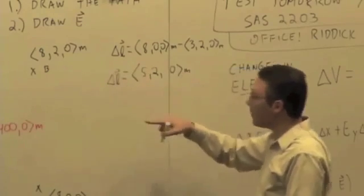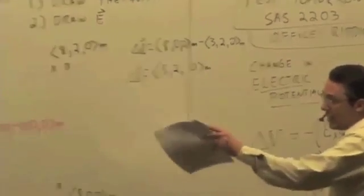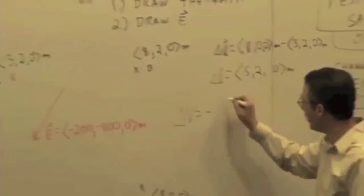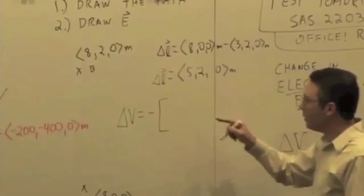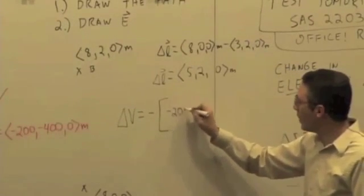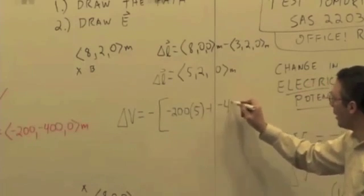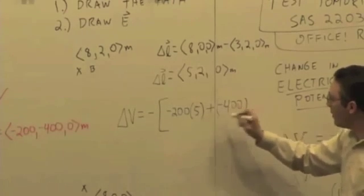We're taking the dot product of that with (-200, -400, 0). So we say delta V is negative of -200 times 5 plus -400 times 2.